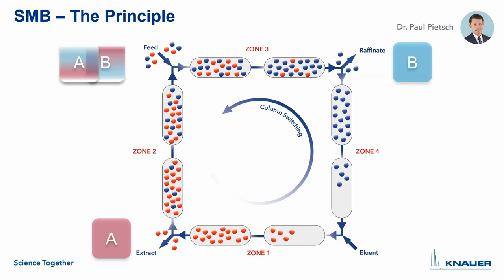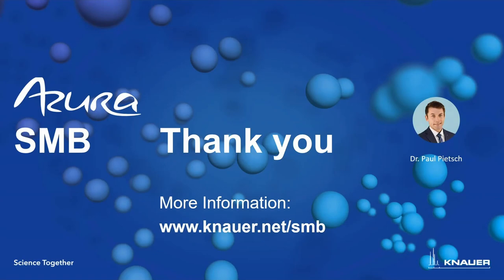The process concept is limited to the separation of binary or pseudo-binary mixtures, since separation is only possible into two fractions — raffinate and extract. The advantage of SMB is the improved utilization of the solid phase, since separation is possible even when the concentration zones of the components overlap significantly over the column length. Higher productivity with lower eluent consumption is achieved compared to classical batch chromatography. In summary, this is the basic theory of the simulated moving bed process. Thank you for your attention. For more information, please visit our website at knauer.net/smb.